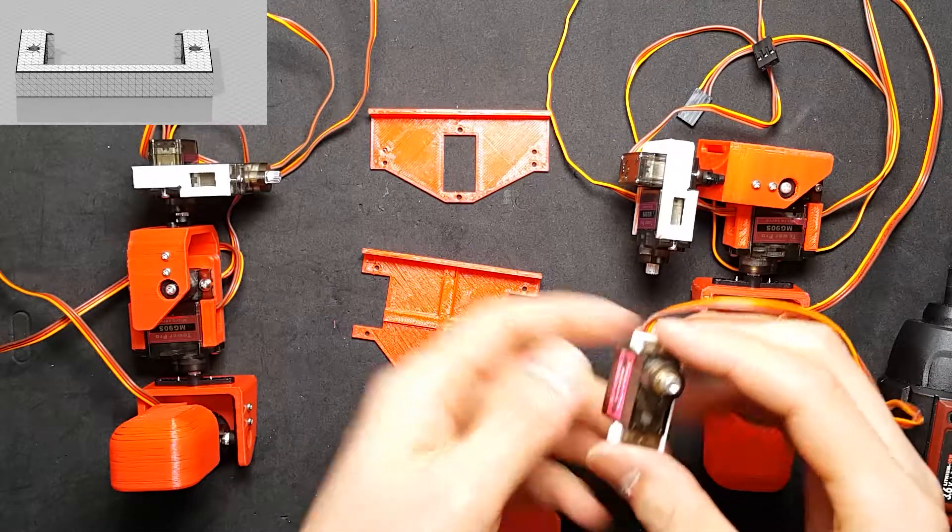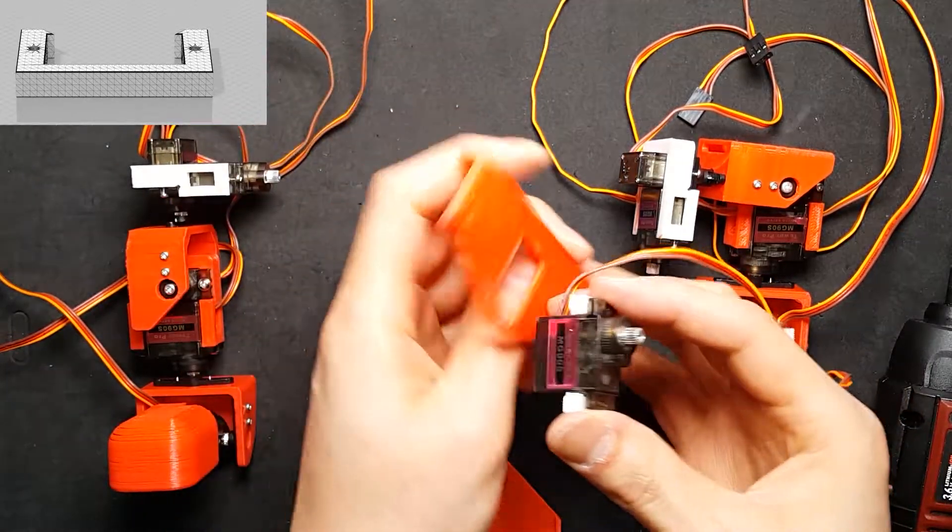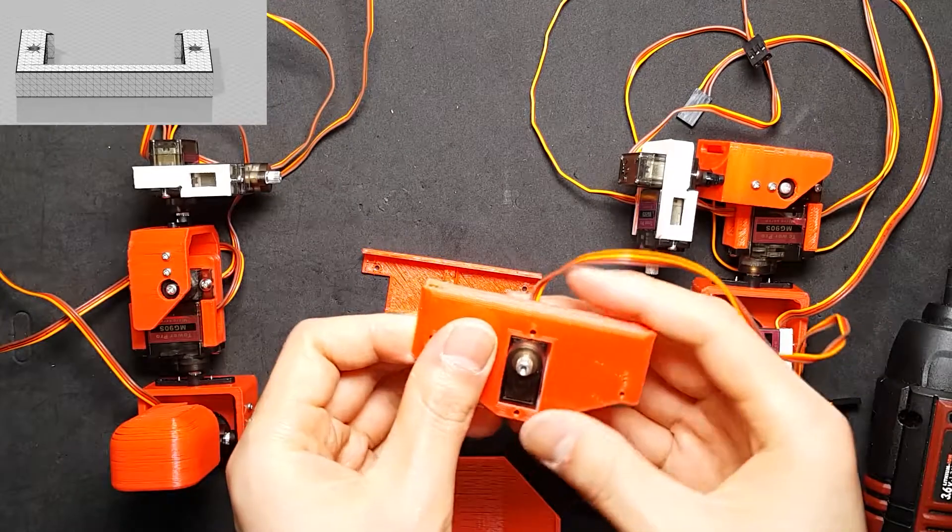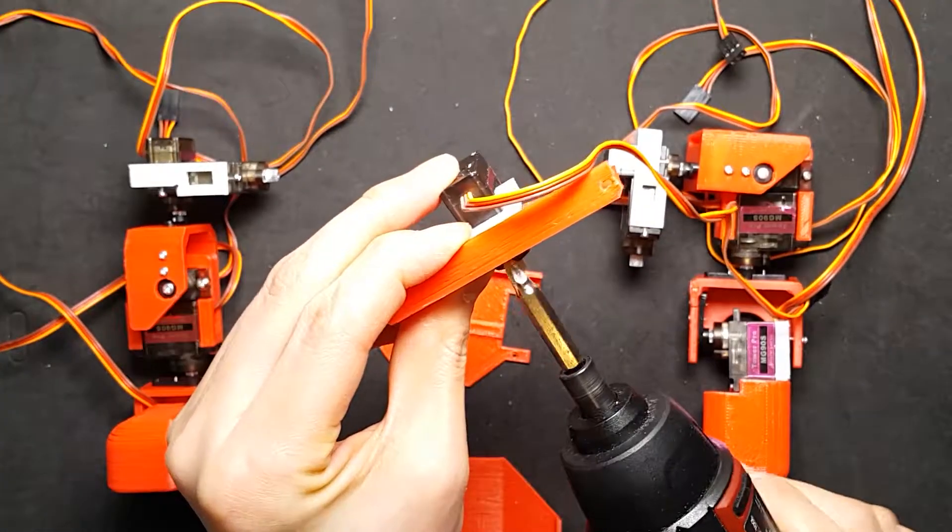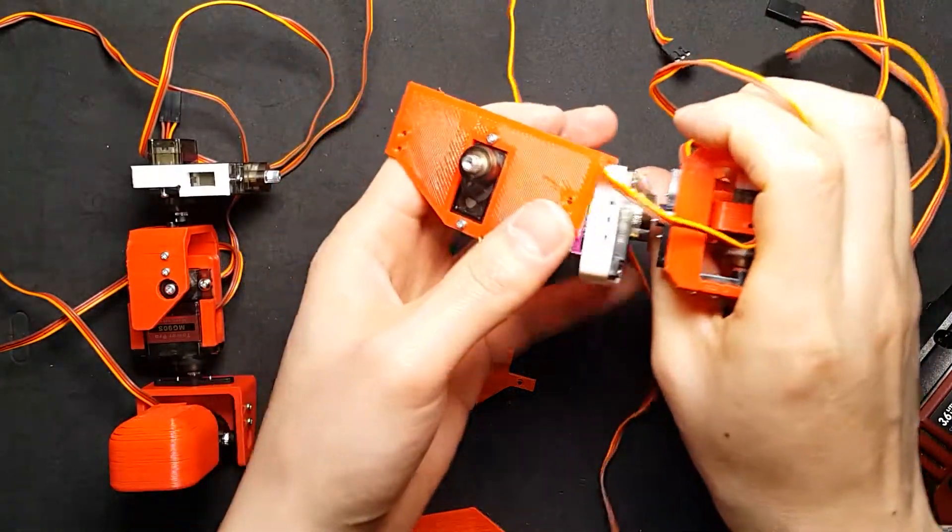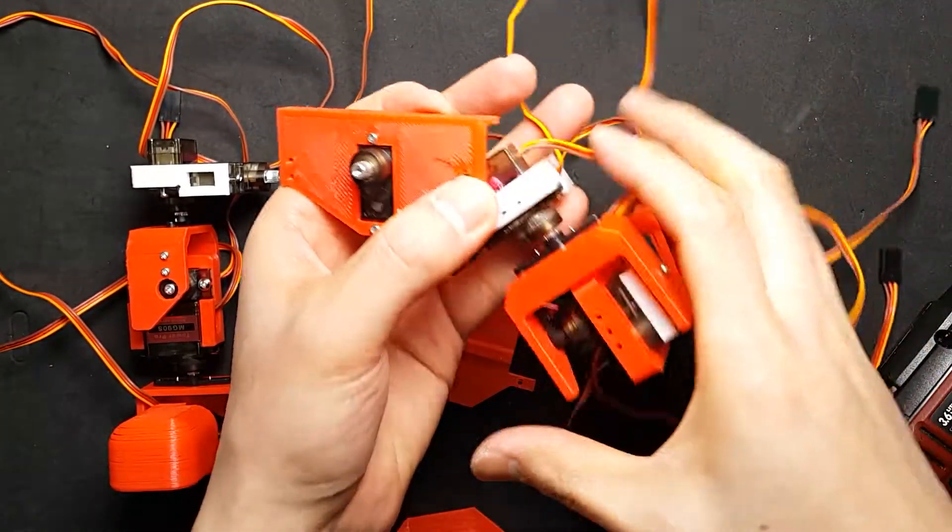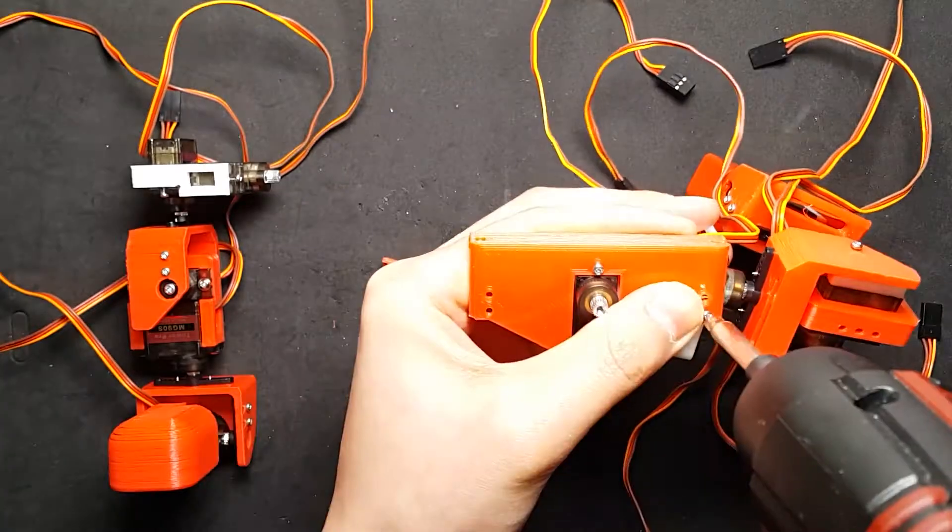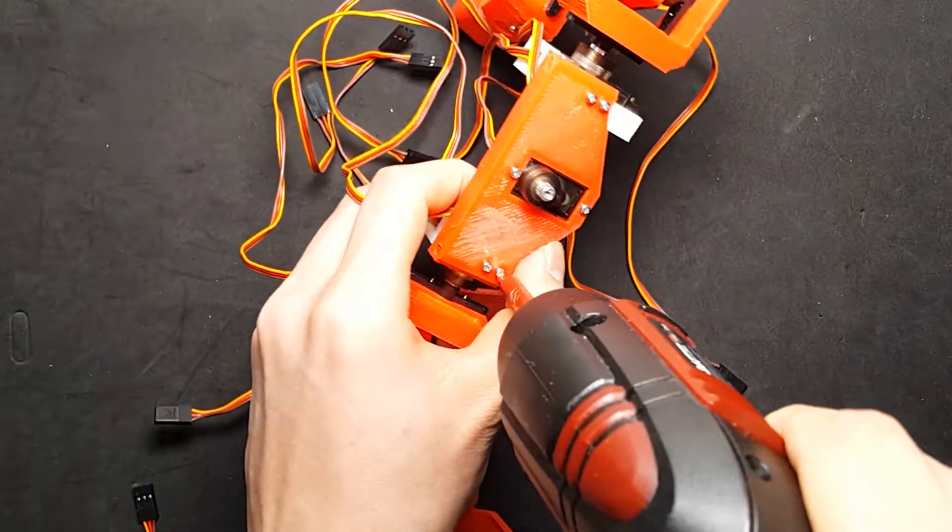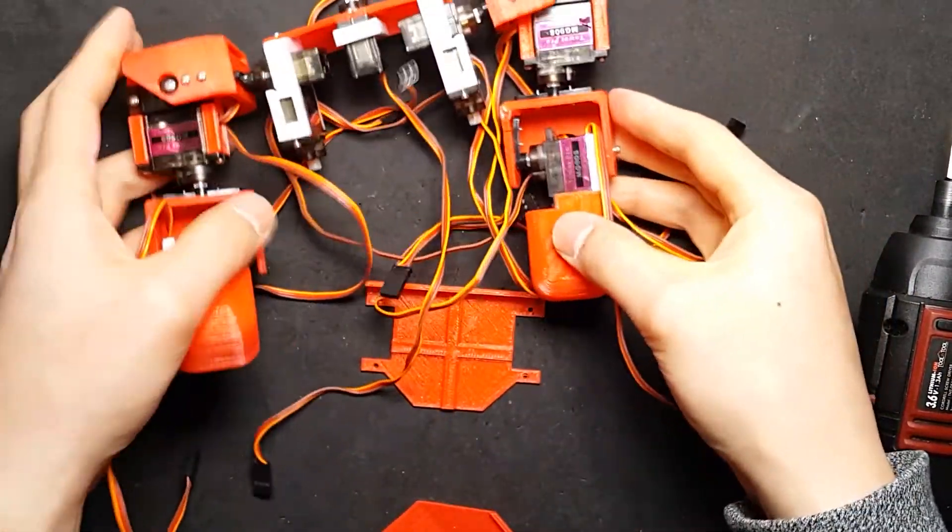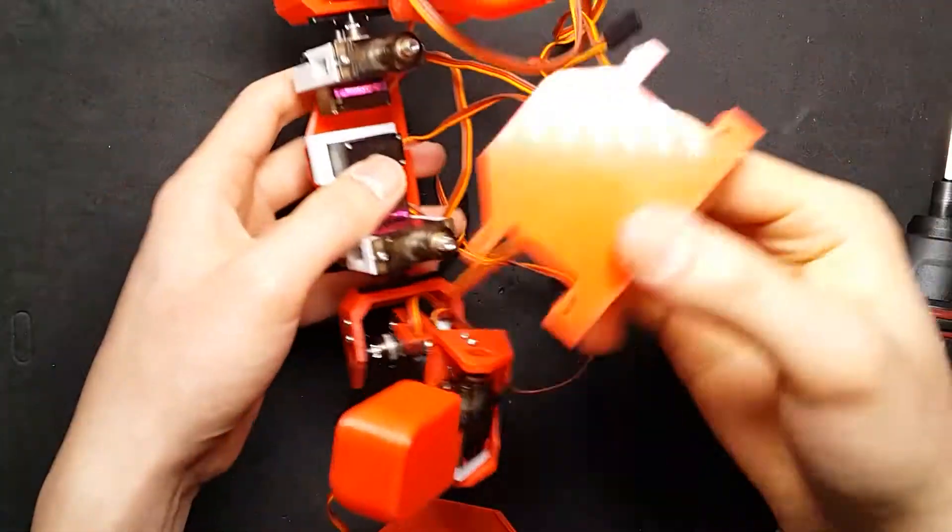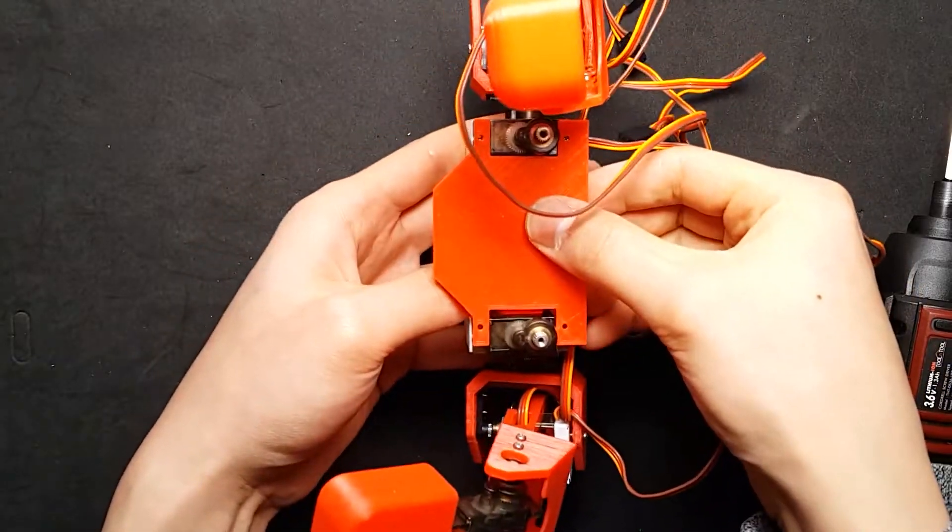We are not going to operate the head motor at this moment, but we need to assemble it for the following episode. Assemble the right and left arm on the top frame where the head motor is assembled. Assemble the bottom frame and front frame as well.